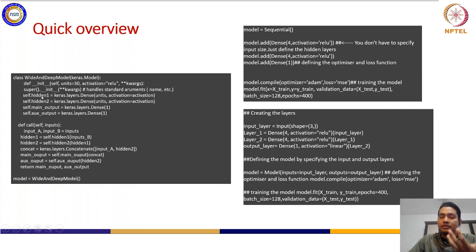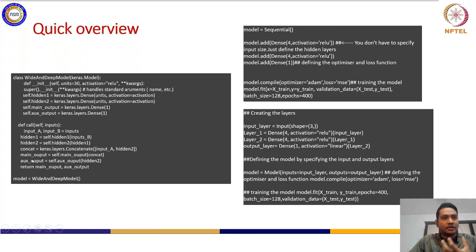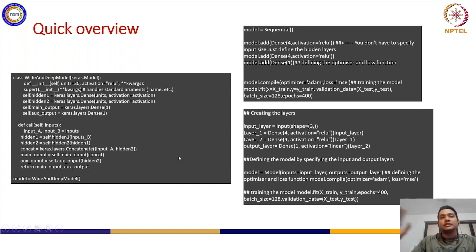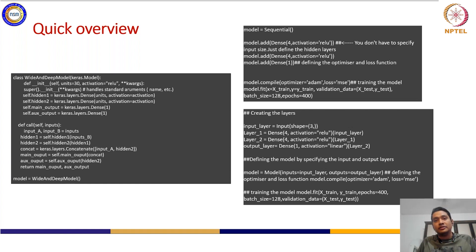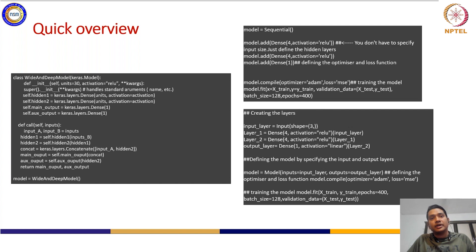For the subclassing approach, keras.Model is the super class. You define the initializer the same way as in PyTorch, connect the layers, then create an instance with model = MyModel(). Simple and elegant. You have different ways of defining models depending on your target model and the flexibility you want - you can use either one.